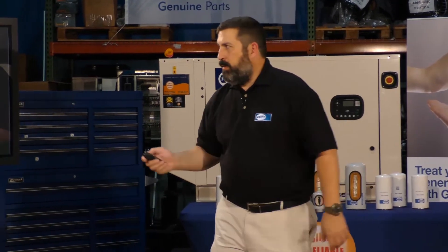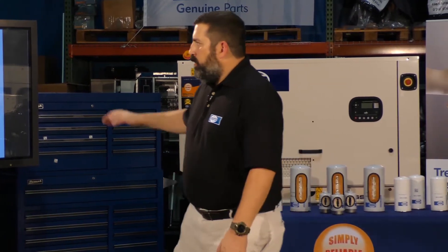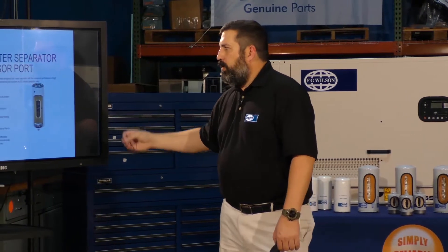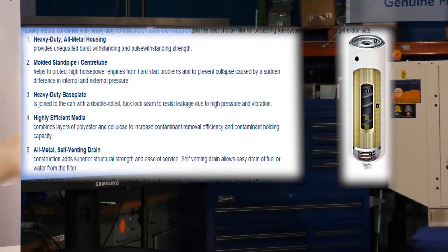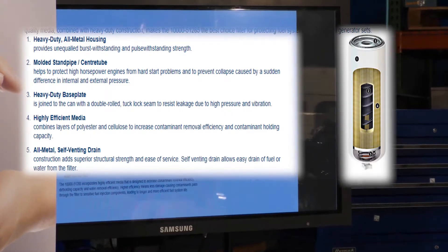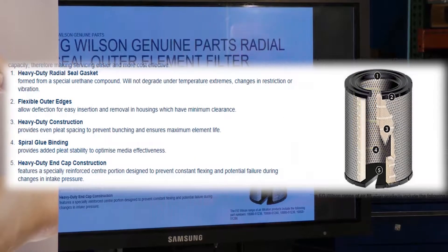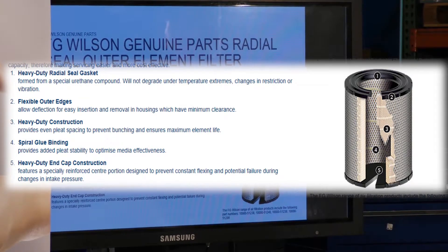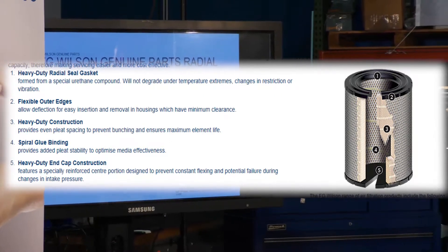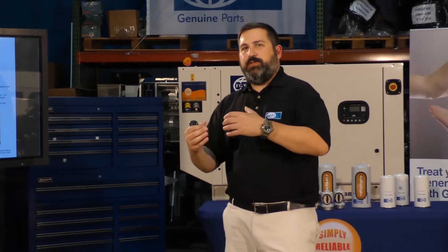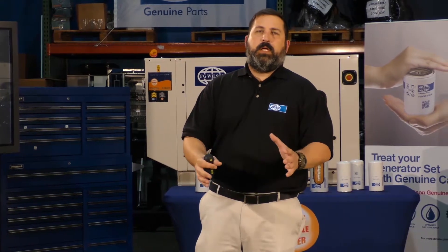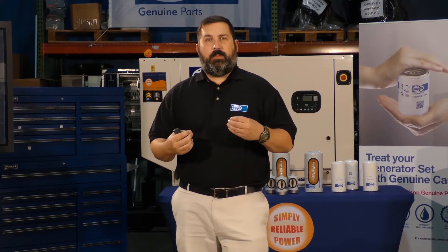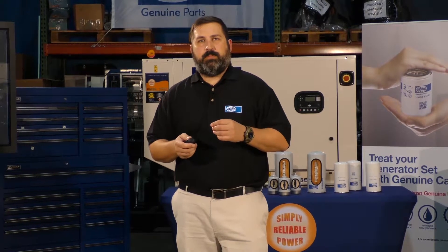As we developed those filters, you can see here all the different components I mentioned: all-metal housing, center tube, end caps — all meeting the specific standards we set for ourselves to give the customer the best value. Air filters are tested the same way on the pieces of equipment. When we talk about our filters and fluids, we're not just manufacturing equipment and putting a filter on it. We know we're responsible for the machine and equipment as a whole.